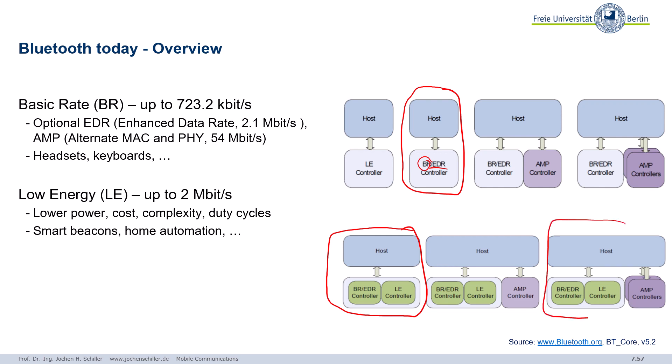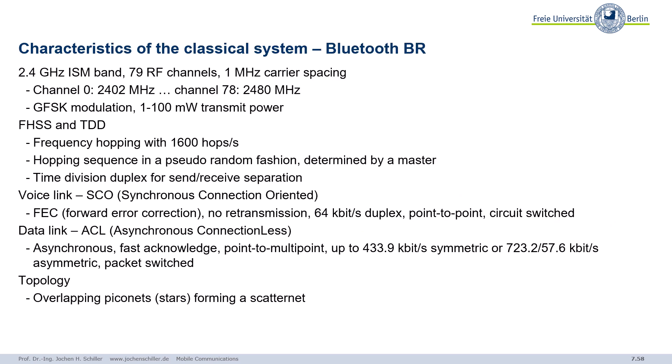If you want a full-featured device you have Low Energy Bluetooth, Basic Rate, Enhanced Data Rate Bluetooth, and several wireless LAN controllers. Classical Bluetooth also operates in the 2.4 GHz ISM band, but there's a big difference: we have 79 channels with 1 MHz carrier spacing, compared to 13 or 11 channels in wireless LAN. Different modulation scheme as well. With more channels, we perform frequency hopping and use time division duplex — hopping in a pseudo-random fashion, with a master that determines the hopping pattern.